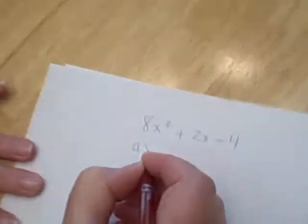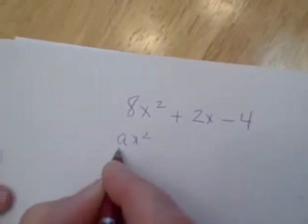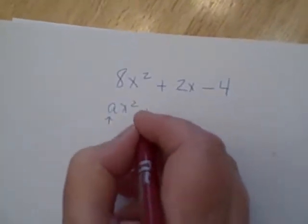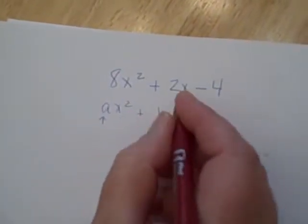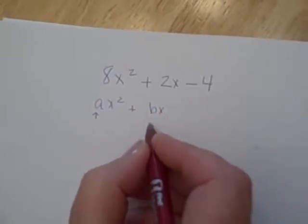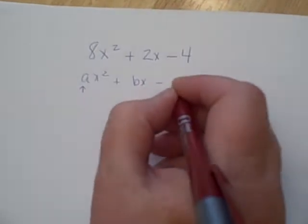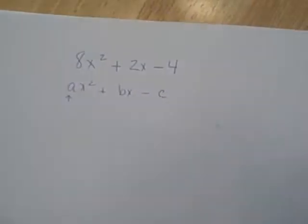that's a quadratic equation because you have some number times x squared, and this number can be anything except 0, plus some number times x, and this can be any number, minus some number, and in this case we've got 4.